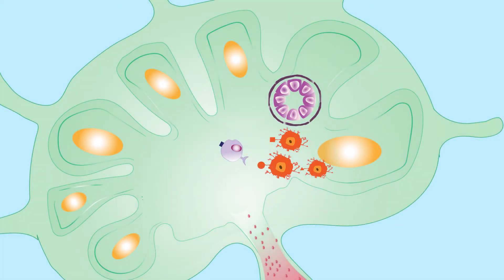If the naive T cell does encounter its specific antigen in the lymph node, the T cell undergoes a signaling response that reduces the surface expression of the S1P receptor.